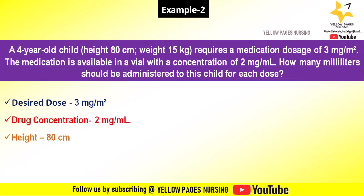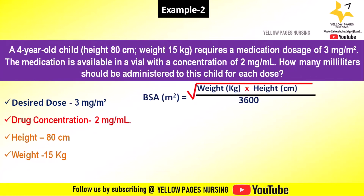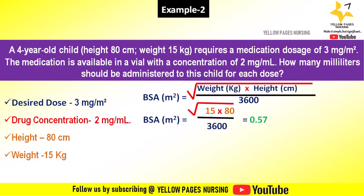Height is 80 centimeters and weight is 15 kilograms. The body surface area calculation is: BSA in meter squared equals the square root of weight in kilograms multiplied by height in centimeters, divided by 3600. This equals the square root of 15 multiplied by 80, divided by 3600, which gives the answer 0.57 meter squared.